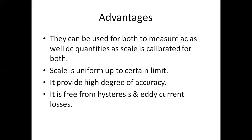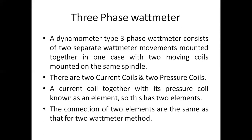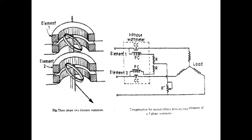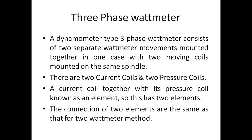Now moving to the second part — the three phase watt meter. We again have the dynamometer type watt meter. A three phase watt meter is essentially two single-phase watt meters connected together. A dynamometer type three phase watt meter consists of two separate watt meter movements mounted together in one case, with two moving coils mounted on the same spindle.